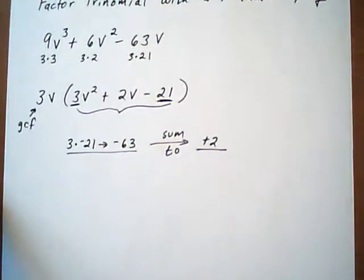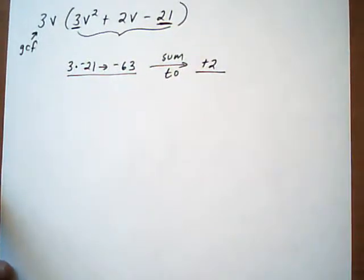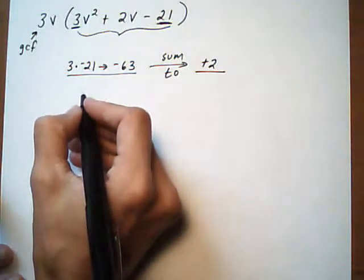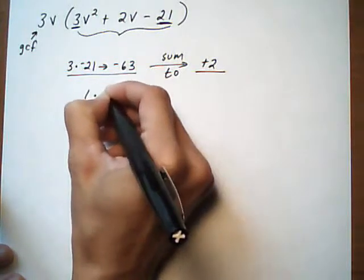Now if you don't see it jumping out at you what the factors are that work, because 9 and 7 are going to work here, then what you want to do is start listing out the possibilities. And start chronologically, 1 times the number,